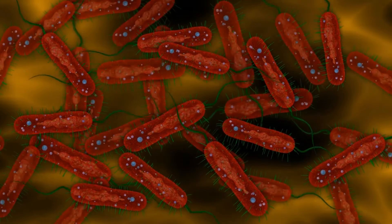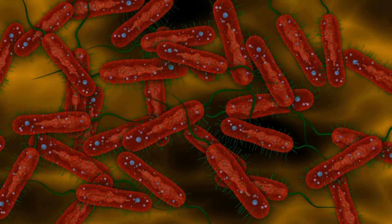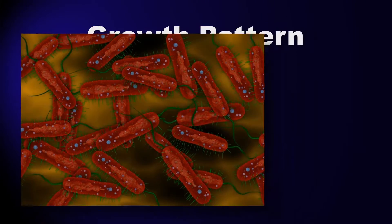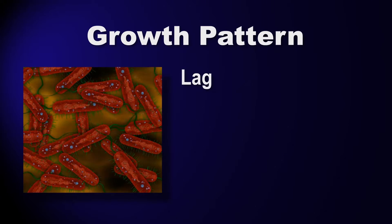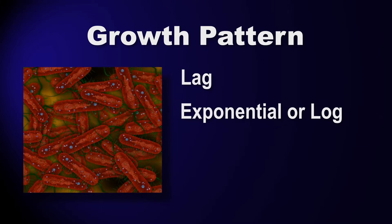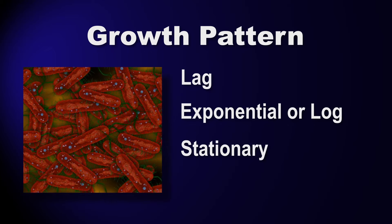But the life cycle of almost all cells follows a predictable four-phase pattern: lag, exponential, stationary, and death.